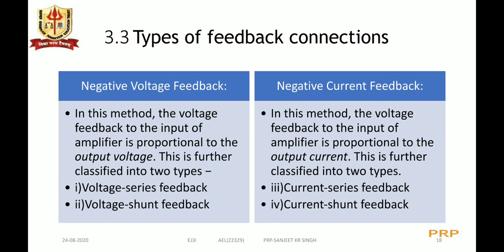Types of feedback connections — negative voltage feedback: in this method, the voltage fed back to the input of the amplifier is proportional to the output voltage, and it is further classified into two types: voltage series feedback and voltage shunt feedback, depending upon whether the feedback signal is provided in series or in parallel with the input. Negative current feedback: in this method, the voltage fed back is proportional to the output current, further classified into current series and current shunt feedback.